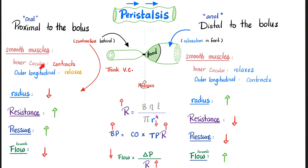The exact opposite happens distal to the bolus — relaxation in front. The inner circular muscles relax; the outer longitudinal muscles contract to keep the food moving forwards. If there's relaxation in front, the lumen dilates, radius goes up, resistance goes down, pressure goes down, and flow increases — flow forwards. Contract behind, relax in front; contract behind, relax in front. This is how you move the food forwards, step by step, proximal to distal.